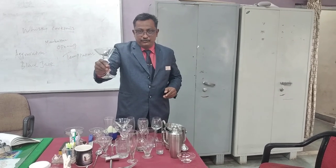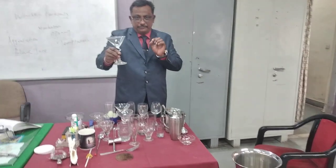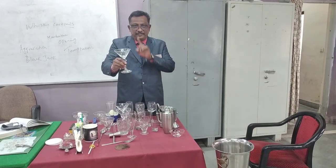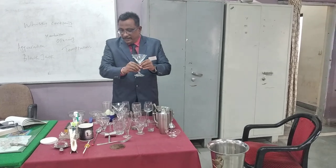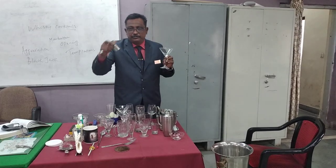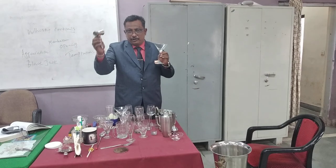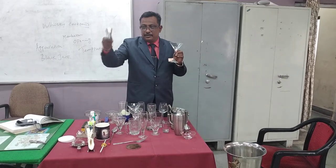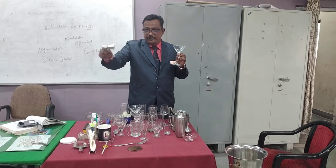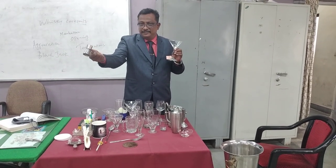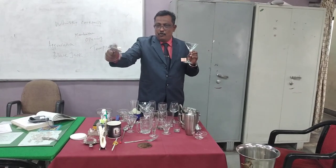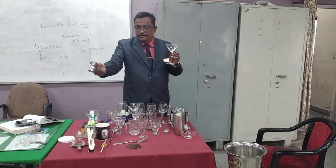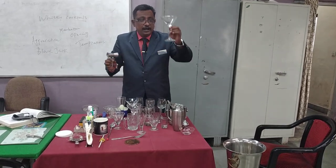The capacity is 4 ounces. One ounce is equal to 28 ml, but we convert it to 30 ml. This is a peg measurer, or we can call it a jigger. This jigger has two sides — 30 ml on one side and 60 ml on the other. This is also called a martini glass in stemware.